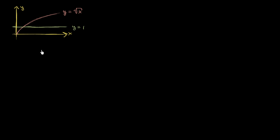We actually care about the interval. So let's say that the interval is between this point right over here where the two points intersect, and between that and x is equal to 4. So let's say that this right over here is x equals 4. So it's going to be just right over here. So this is the interval that we're rotating. We're going to rotate it around y equals 1, not around the x-axis.